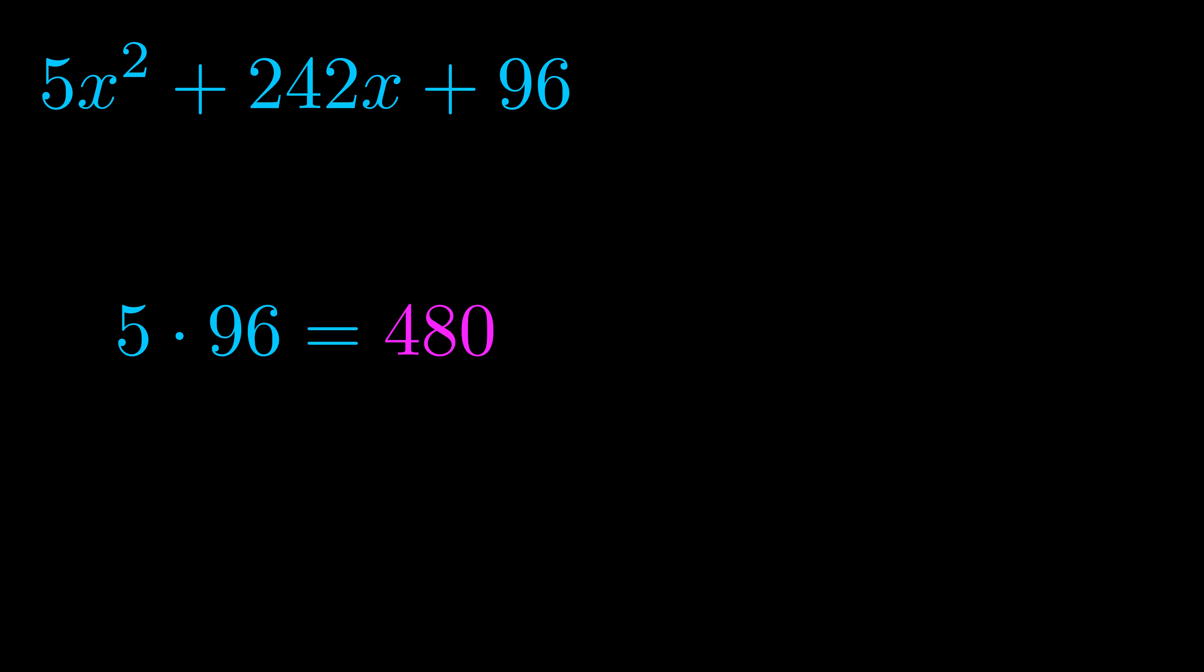Step two is to try to find all of the pairs which multiply to this number. You don't really need to find all of them, but go ahead and write down as many as you can that multiply to the magenta value. Pause the video and resume when you're ready to continue. Okay, here's what I came up with.